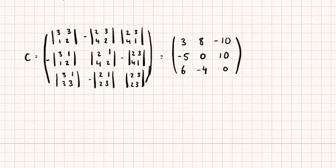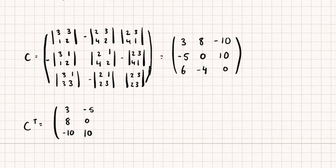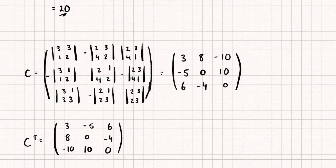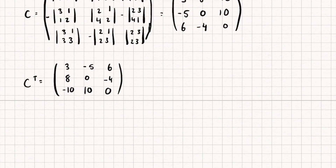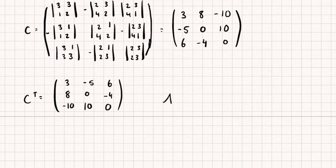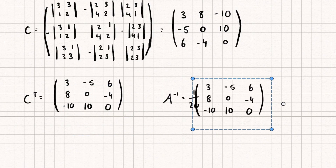Then remember, we find the adjoint matrix which is its transpose. So the transpose of this is going to be 3, 8, negative 10 / minus 5, 0, 10 / and 6, negative 4, 0. To find the transpose you just flip the rows and columns — the first row of matrix C becomes the first column of C transpose, the second row becomes the second column, and the third row becomes the third column. From here, the inverse of A is 1 over the determinant multiplied by our C transpose. And so there we go — that's how you find the inverse of a 3x3 matrix.